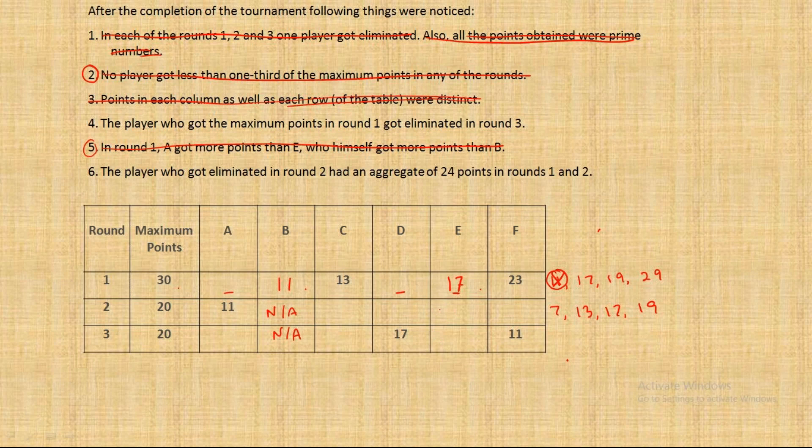Now between A and D, it is written that the player who got maximum score in round one, so clearly it has to be the person who gets 29 points in round one. So we have two numbers, 19 and 29. So 29 we will give to the player who gets eliminated in round three.